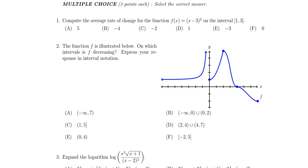In this video, we provide the solution to question number one for the practice final exam for math 1050, in which case we're asked to compute the average rate of change of the function f of x equals x minus 3 squared on the interval 1 to 3.